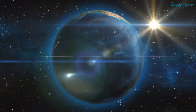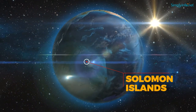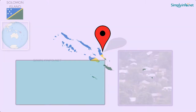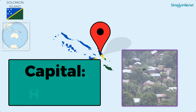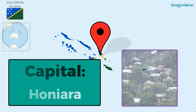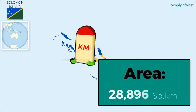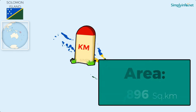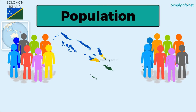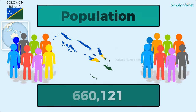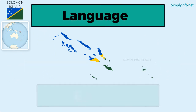Name: Solomon Island. Capital: Honiara. Area: 28,896 square kilometers. Population: as of 2018, it is 660,121. Language: English.